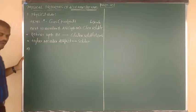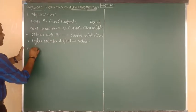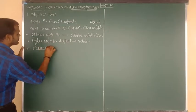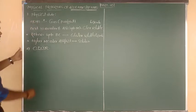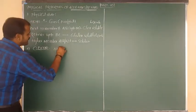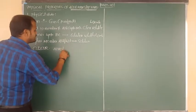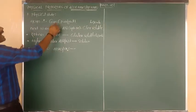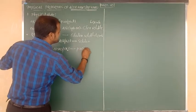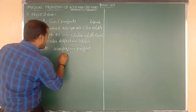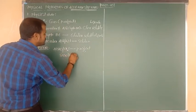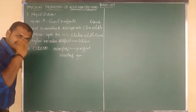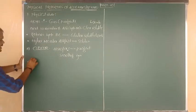The next physical property is odor. About formaldehyde first — formula HCHO or CH₂O. Formaldehyde has a pungent smell; it is a pungent smelling gas with an unpleasant smell.